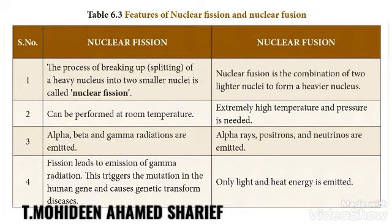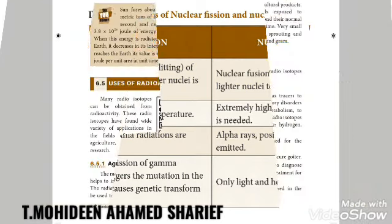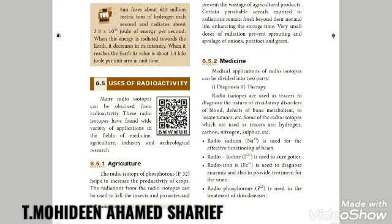Nuclear fission is the process of breaking up of heavy nuclei into two smaller nuclei; it can be performed at room temperature. Nuclear fusion is the combination of two lighter nuclei to form a heavier nucleus, and extremely high temperature and pressure are needed to perform the nuclear fusion process.